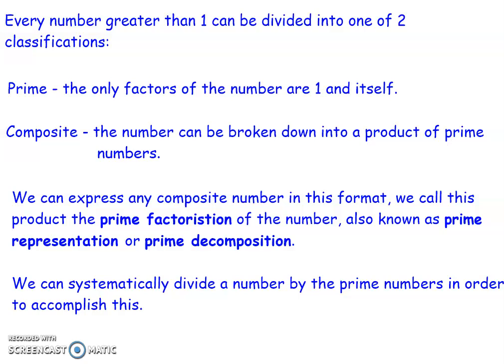Every integer value greater than one can be divided into one of two classifications. It can either be a prime number, which only has the factors of one and itself, or it can be what's called a composite number. A composite number can be broken down into a product of prime numbers, so we can factorize that number down such that it can be represented as a product of numbers all of which are prime. The term we use to describe this is prime factorization of a number, also called prime representation or prime decomposition — all three terms represent the same thing: break the number down into prime factors.